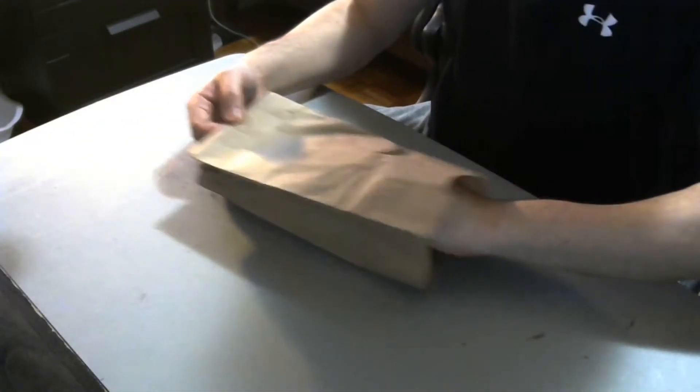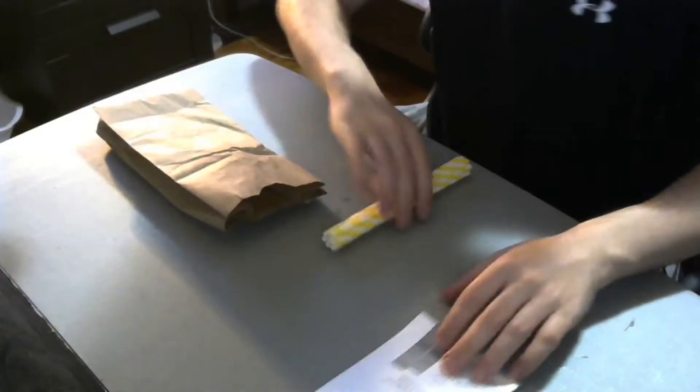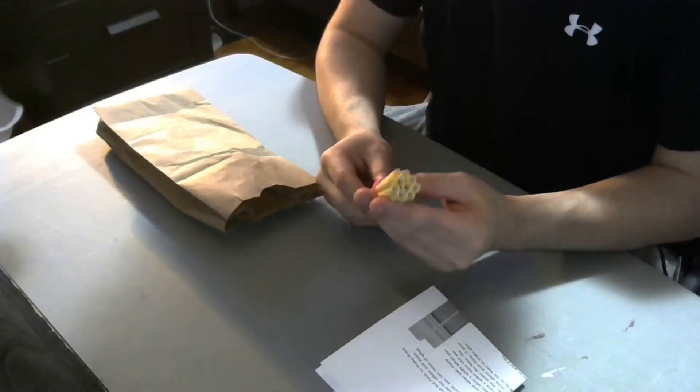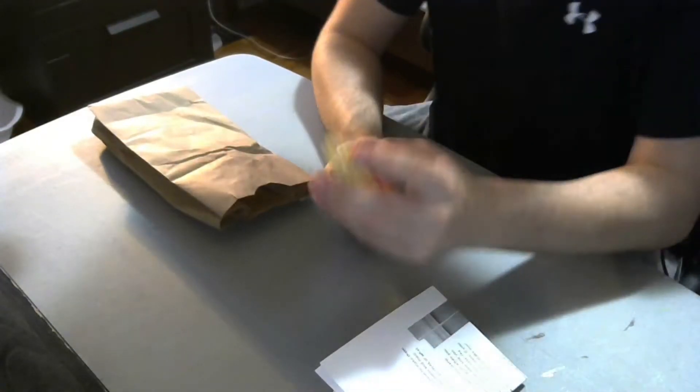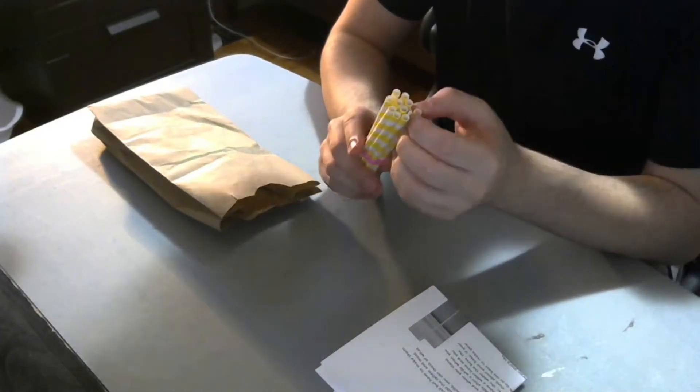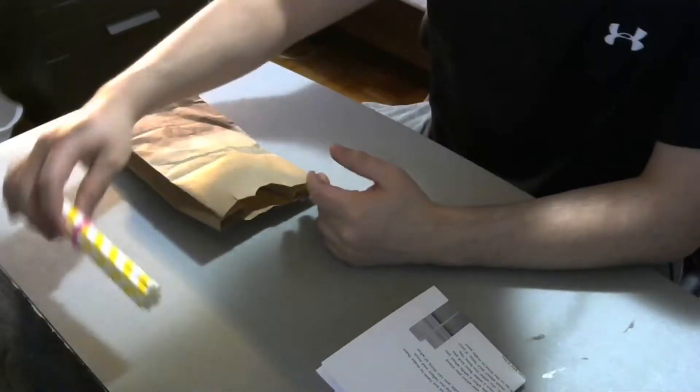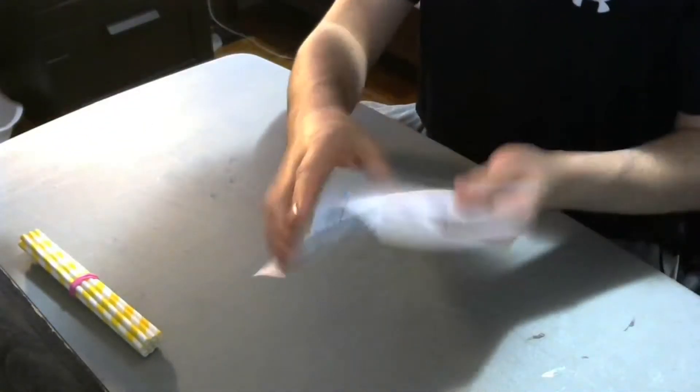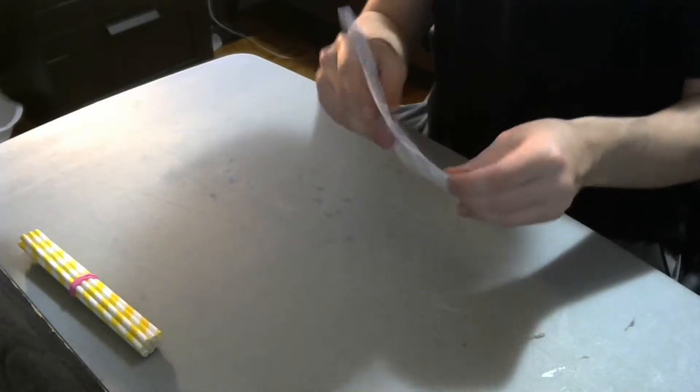So we got our instructions and a nice roll of toothpicks or wow, plastic straws. These ones are made of paper, environmentally friendly. All right, we don't need this anymore. Now let's open up our instructions and see what we got.